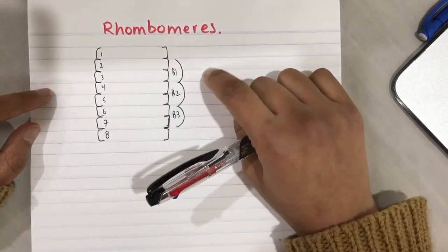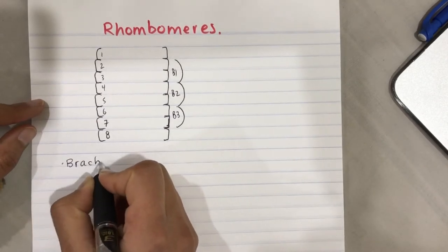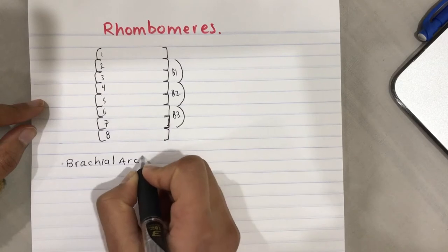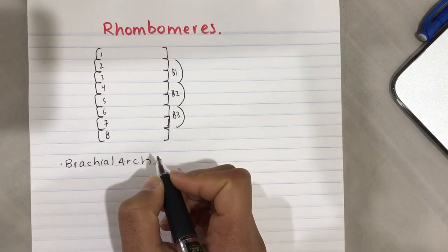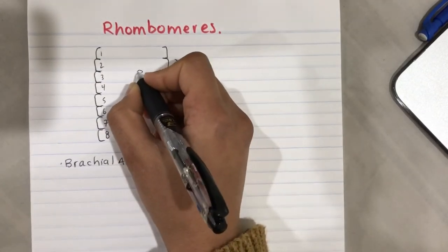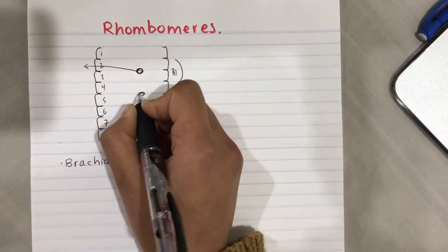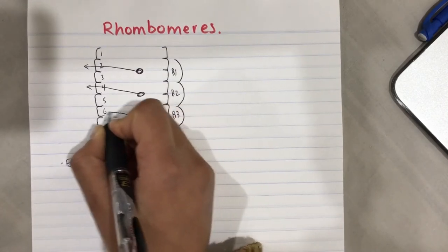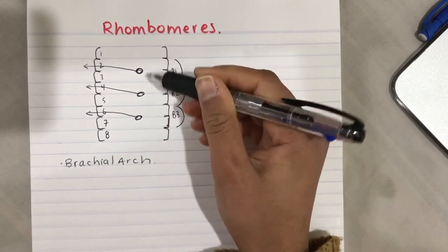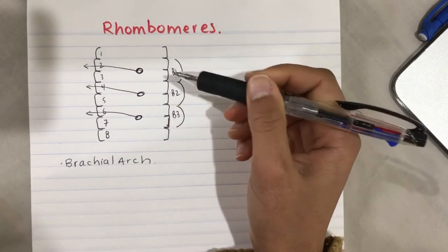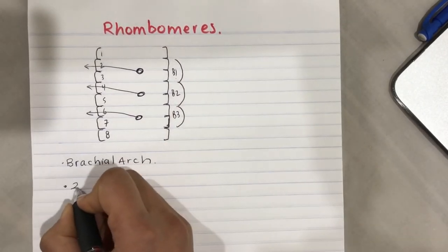Every two rhombomeres form a brachial arch. The motor neurons of each cranial nerve exit via the even rhombomere, but the cell body is in both rhombomeres of the brachial arch. This is called the two-segment pattern.